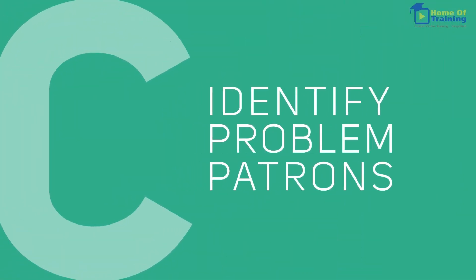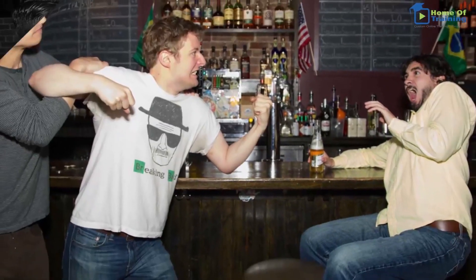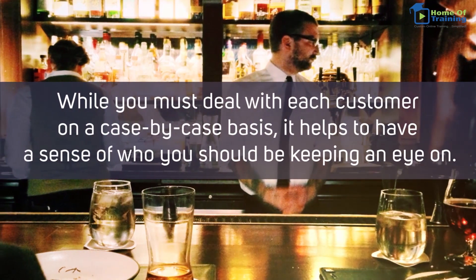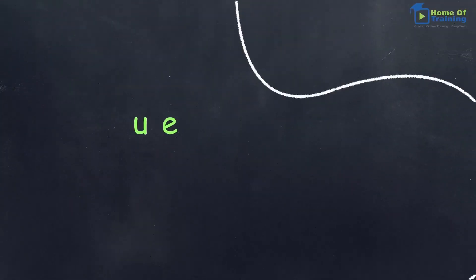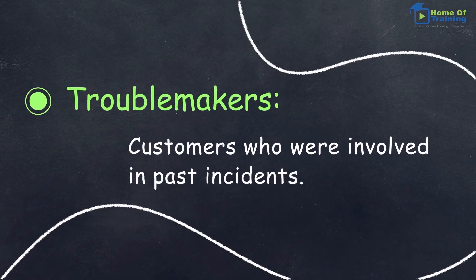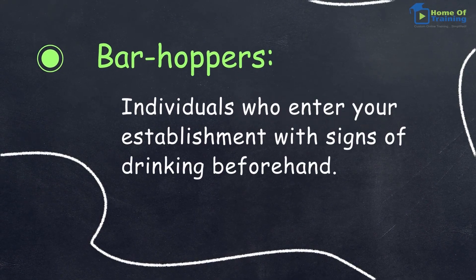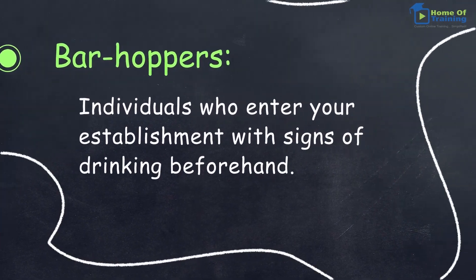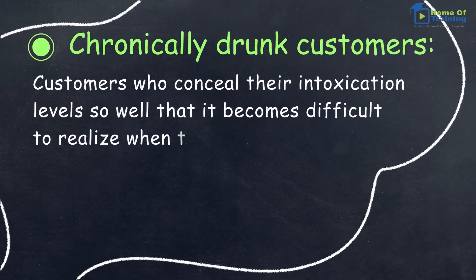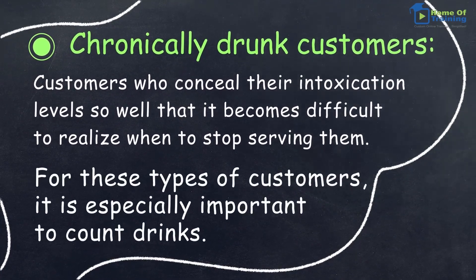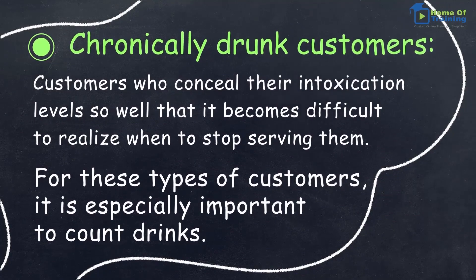Identify problem patrons. Some customers are going to cause you more of a headache than others. While you must deal with each customer on a case-by-case basis, it helps to have a sense of who you should be keeping an eye on. These include troublemakers — customers who are involved in past incidents; barhoppers — individuals who enter your establishment with signs of drinking beforehand; and chronically drunk customers — customers who conceal their intoxication levels so well that it becomes difficult to realize when to stop serving them. For these types of customers, it is especially important to count drinks.